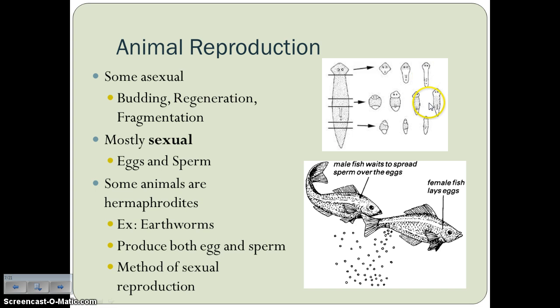Some animals, like the earthworm, are actually hermaphrodites — they produce both male and female reproductive cells. So they're capable of being sort of whatever they need to be in the moment, but they still require another earthworm to reproduce. So it's still a method of sexual reproduction.